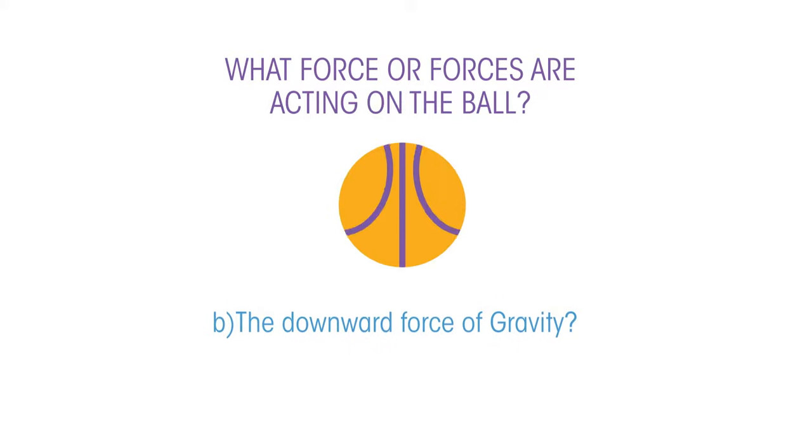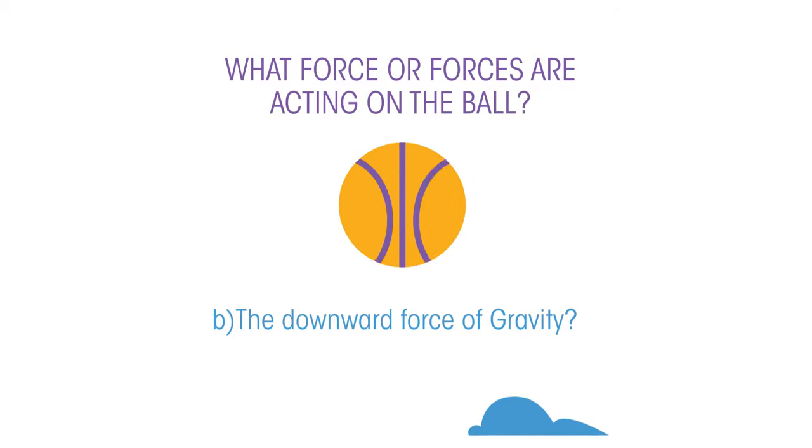The answer is just the downward force of gravity, which gradually slows the ball, stops it, then brings it back down, making it fall faster and faster. The unbalanced force here causes the ball to change its velocity.